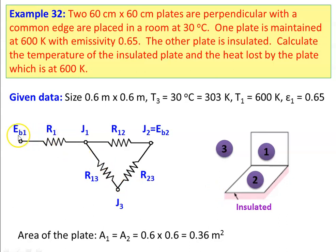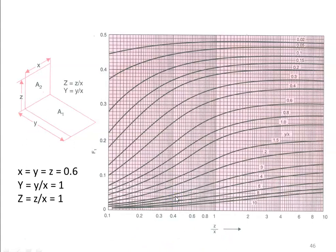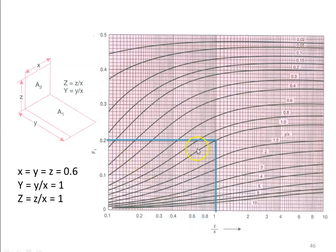In the network: Eb1 is the emissive power of the first surface, J1 is the radiosity of the first surface, R1 is the surface resistance, R12 is the shape factor resistance, and R13, R23 are shape factor resistances. J3 equals Eb3 and J2 equals Eb2. The area of the plate: A1 equals A2 equals 0.6 times 0.6 equals 0.36 square meters. To calculate the shape factor, X equals Y equals Z equals 0.6, so capital Y equals small y divided by x equals 0.6 over 0.6 equals 1, and capital Z equals small z divided by x equals 1.